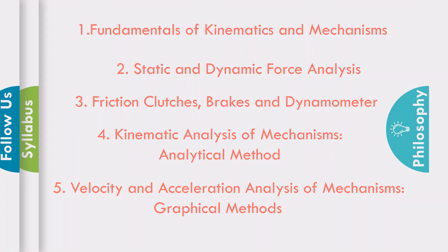Chapter 5 is the last and a very important chapter — Velocity and Acceleration Analysis of Mechanisms using graphical methods. This is one of the most important and interesting topics in Theory of Machines 1. Different methods include the relative velocity and acceleration method, the instantaneous center method, Coriolis component of acceleration, and Klien's construction. These are the graphical methods we will use to determine velocity and acceleration of different mechanisms.